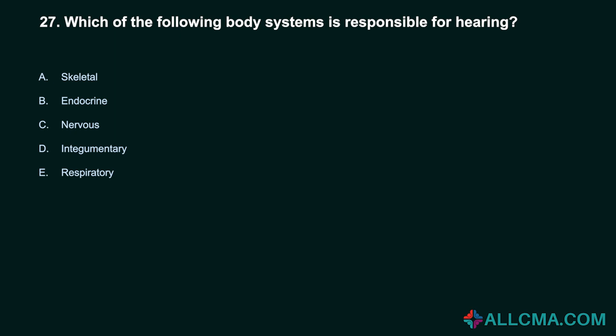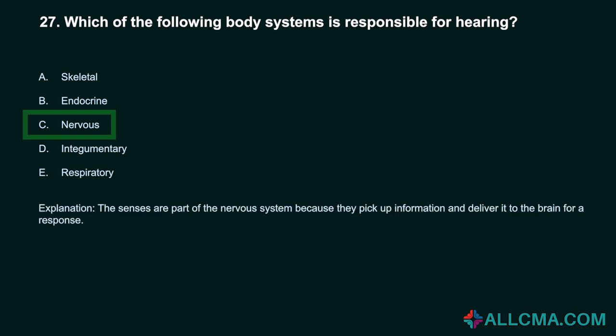Question 27: Which of the following body systems is responsible for hearing? a) skeletal, b) endocrine, c) nervous, d) integumentary, e) respiratory. Correct answer: C, nervous. The senses are part of the nervous system because they pick up information and deliver it to the brain for a response.